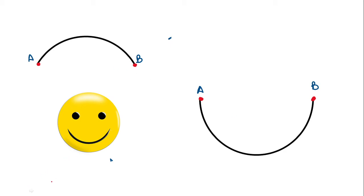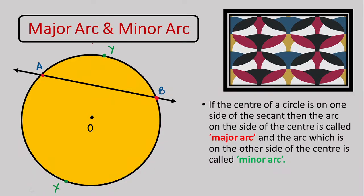These two are the arcs obtained from the same circle. Now let's see what is a major arc and a minor arc. A single secant cuts the circle into two parts — the minor arc will be the smaller piece, and the bigger piece will be the major arc. When defining the major arc more precisely, the arc of the circle which contains the center will be called the major arc.